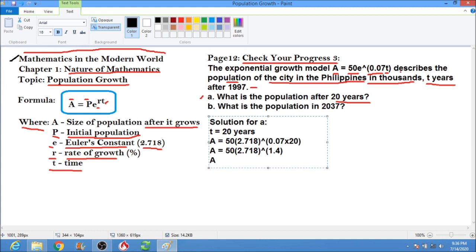Therefore, we have A equals 50 times, using your calculator. We have 2.718 to the power of 1.4, and that will be equals to 4.0546.